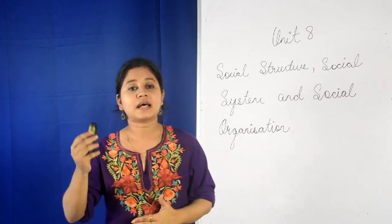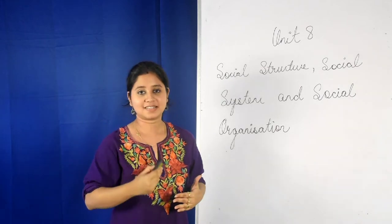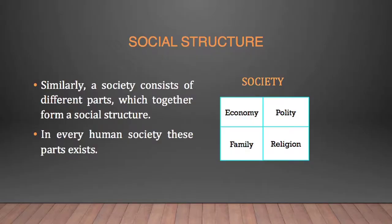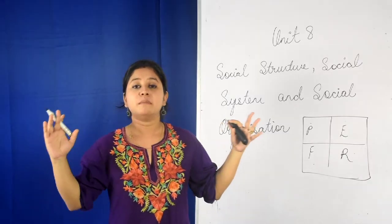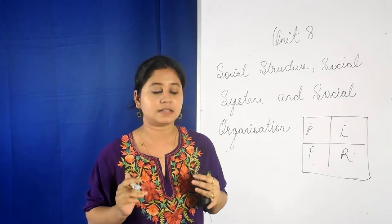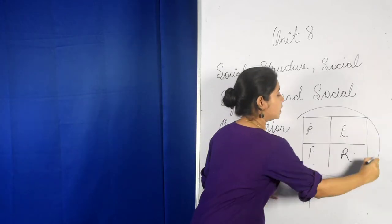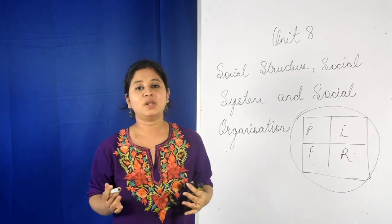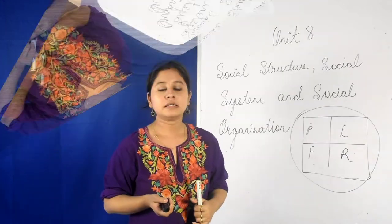Similarly, a society consists of different parts. In a diagrammatic representation of a society, we will have the polity, the economy, the family, and the religion. These are all parts of society which make it complete, and this whole arrangement of different parts is called social structure.